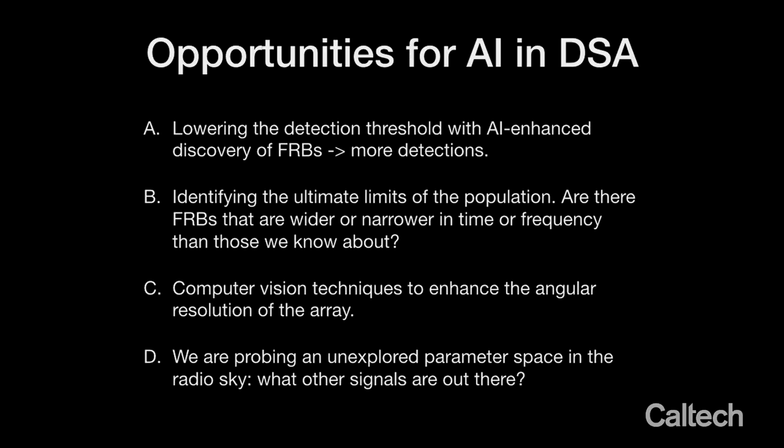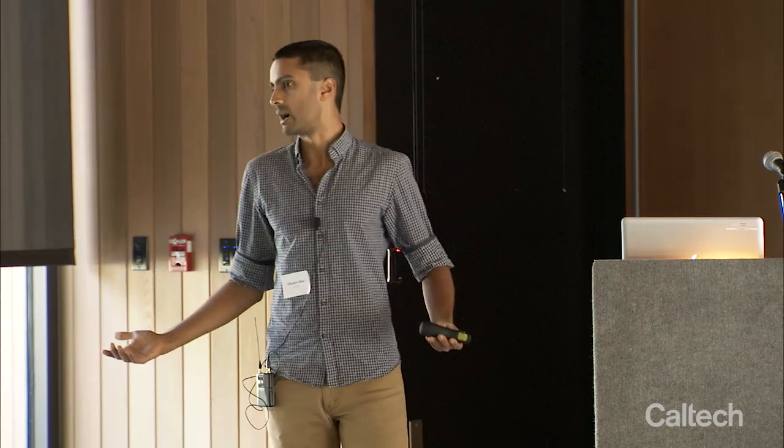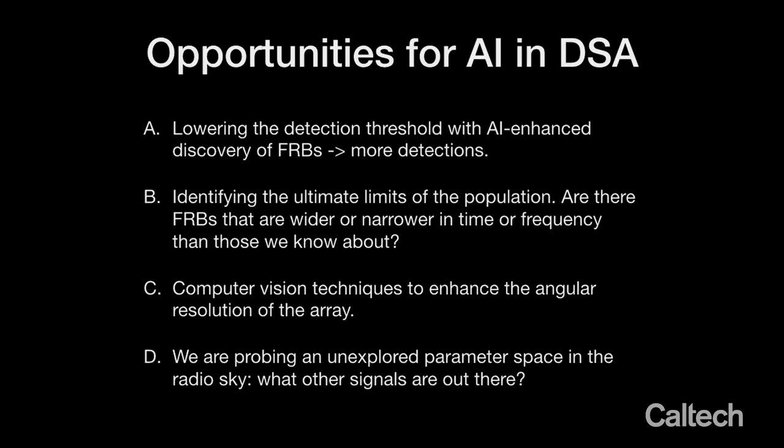These machine learning approaches tend to work, and we're hoping to use one of these implementations or our own. We also have not just time-frequency image data, but actual images of the sky taken at very high time resolution, which means we can adopt a more complicated and yet more efficacious approach. The specific opportunities within this project include lowering the detection threshold — the lower your threshold, the more detections you have. There is also the big question of identifying the ultimate limits of our population. At the moment we search for what we know; we want to be able to search for things we did not expect, which is very ripe for AI. We're also probing a new discovery space combining high time, frequency, and angular resolution.